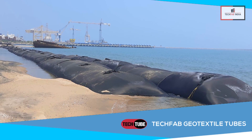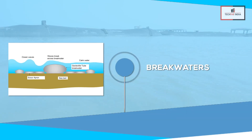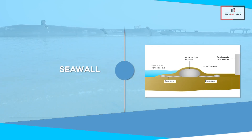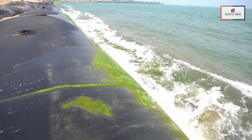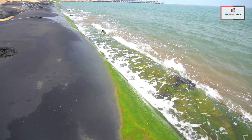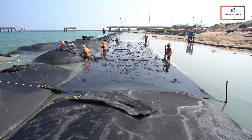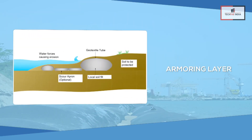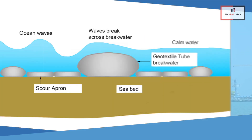TechFab geotextile tubes are used for erosion prevention measures in coastal structures such as breakwaters, groin, revetment, seawall and land reclamation. TechFab geotextile tubes also boost algae formation and silting. The usage of TechFab geotextile tubes includes various applications and adheres to intended functions such as a core material, armoring layer, filtering layer and scour protection.